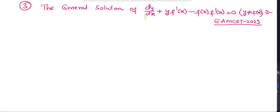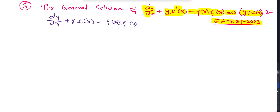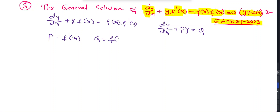This is the next question. The general solution of dy/dx + y·f'(x) - f(x)·f'(x) = 0, where y ≠ f(x). This is an M-set 2023 question. This is a linear DE of the form dy/dx + P·y = Q, where P = f'(x) and Q = f(x)·f'(x).